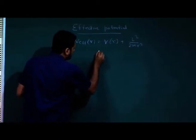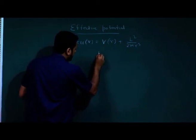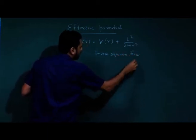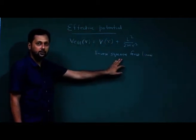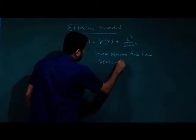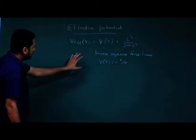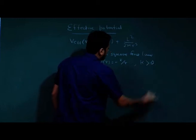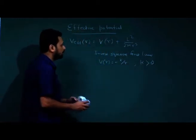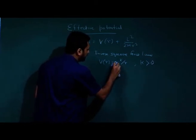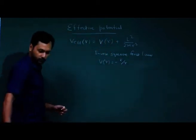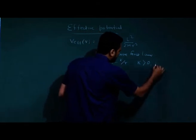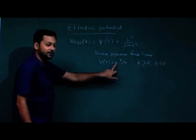Let us first take the very common and well-discussed inverse square force law. The force is proportional to inverse square, so the potential V(R) is given by −K/R. I am trying to show how this effective potential looks for −K/R, and please remember K is greater than 0. We will take two examples and see how the potential changes for K > 0 and K < 0.